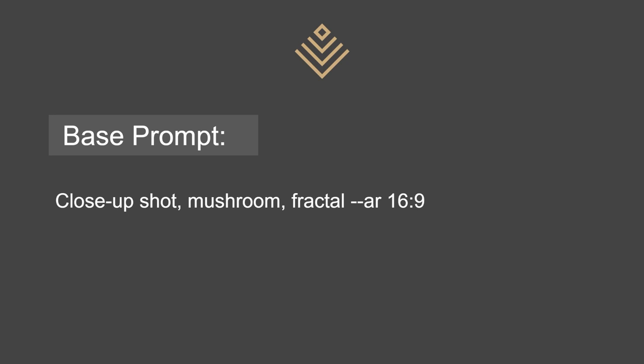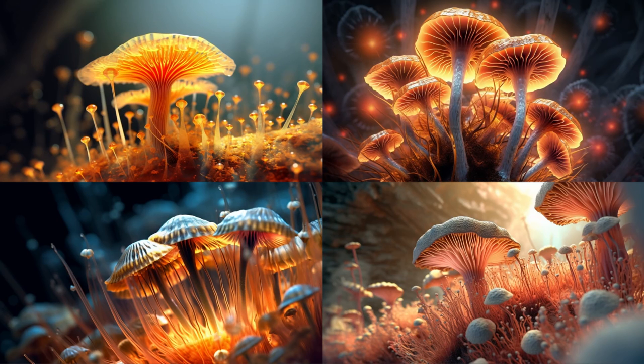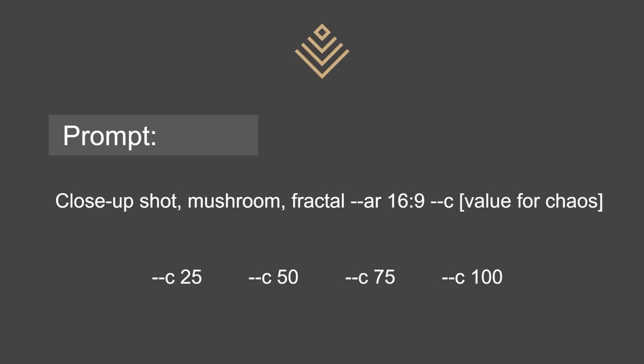The base prompt I'm using here is close-up shot mushroom fractal, and then I add the aspect ratio parameter. The prompt with chaos added is close-up shot mushroom fractal, the aspect ratio, and the value for C — that is dash dash C, space, and then you add the value. I'm starting with zero and then I'll add 25, 50, 75, and 100. 100 is the maximum you can give it.